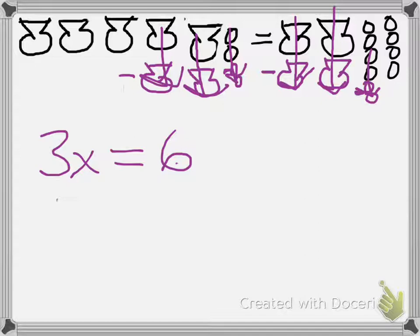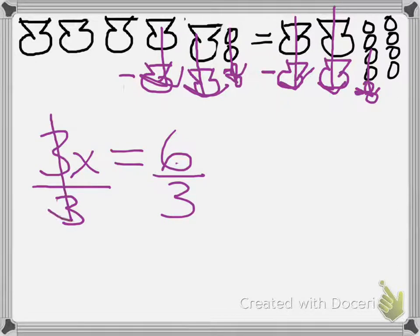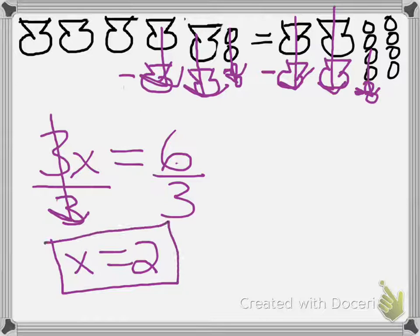So what is the next step? We have to get x by itself — we want to know how much is in one pouch. The 3 is hugging the x, which means multiplication, so we have to do the opposite, which is division. I'm going to divide both sides by 3. That crosses out the 3 on the left, and we're left with x on this side. 6 divided by 3 is 2, so x equals 2.